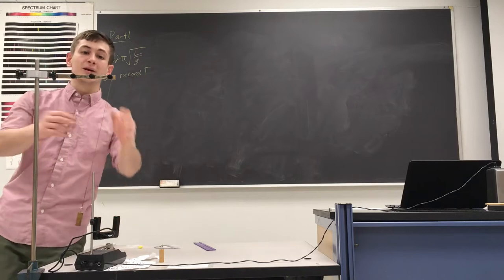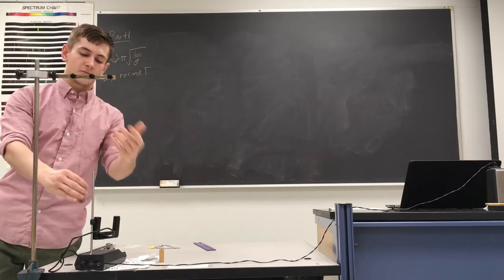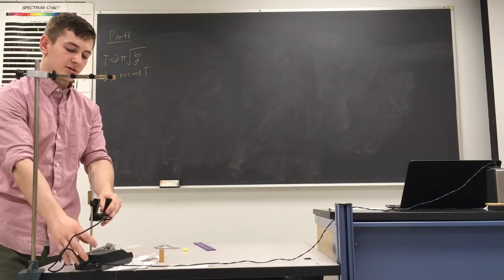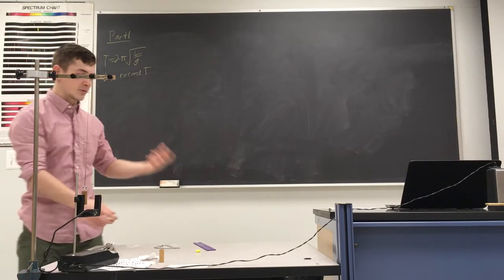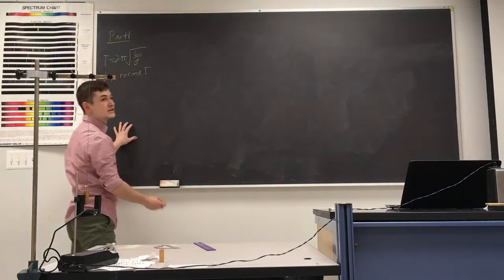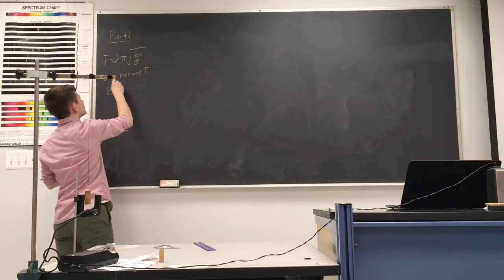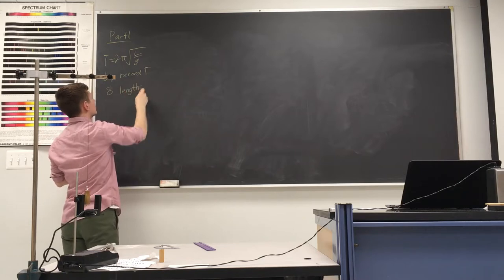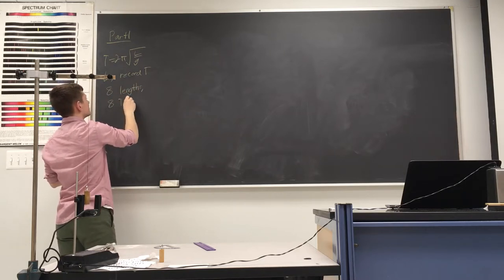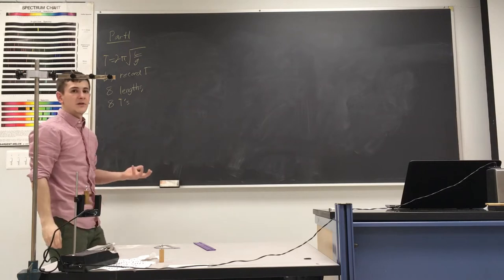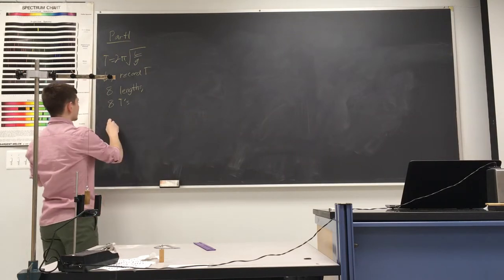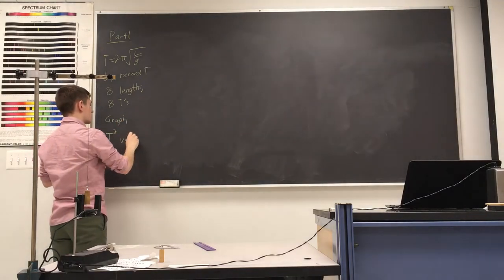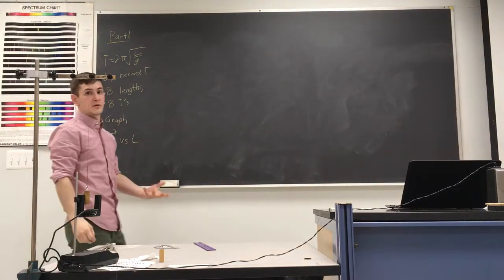We're going to do eight different lengths to get eight different periods. We move the string, decrease the length a little bit, record the period again, and repeat for eight total trials. So we need eight lengths, which will give us eight periods. Once we have that, we're going to graph the period squared versus L, the effective length of the pendulum.